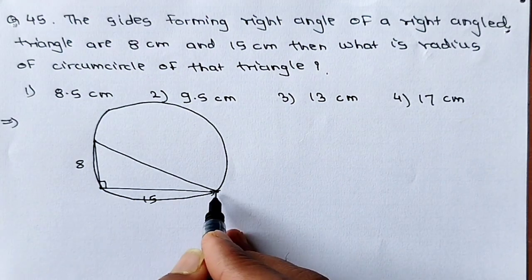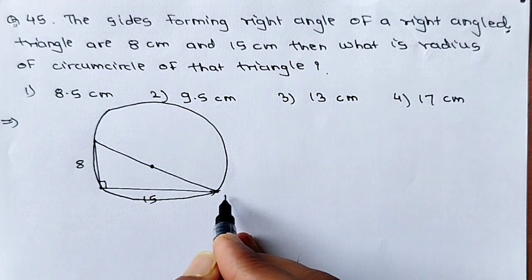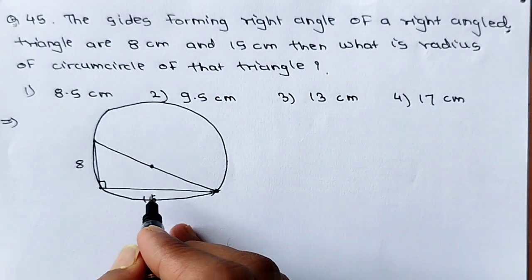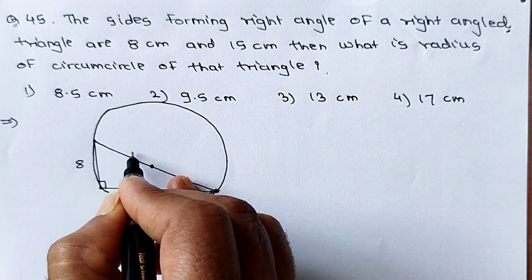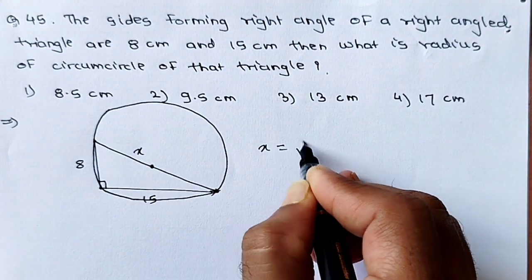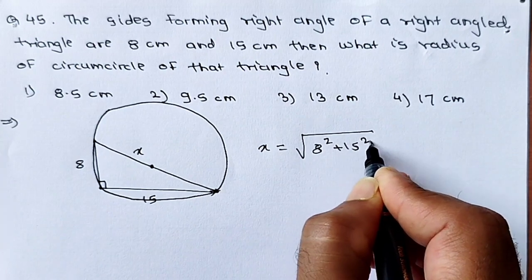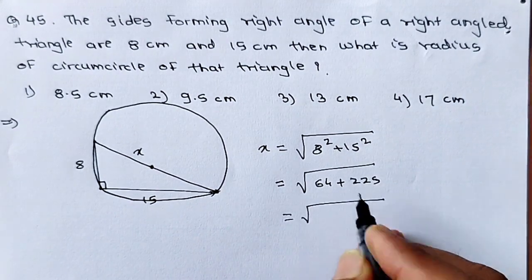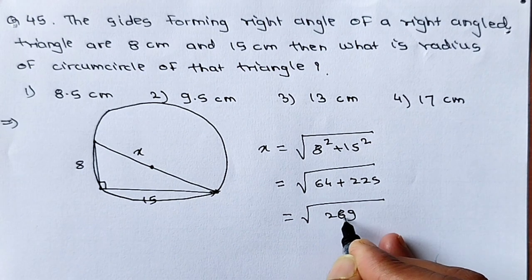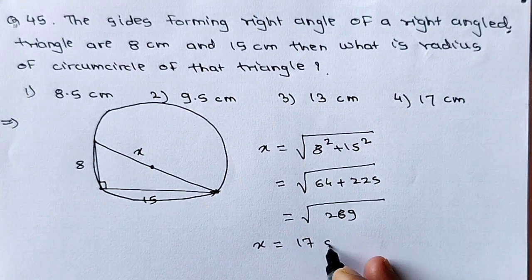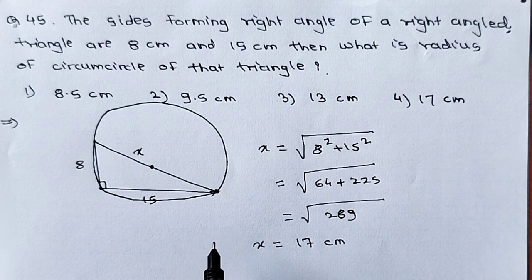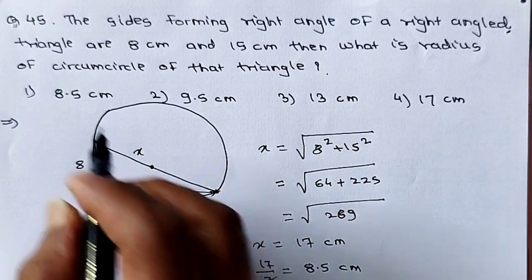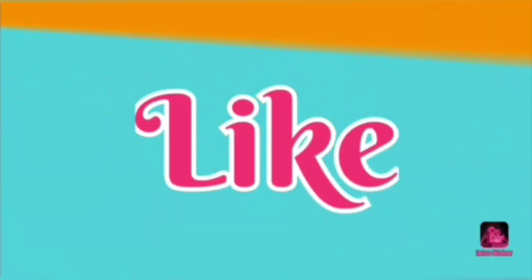For this right angle triangle property, the circumcenter always lies on the hypotenuse. So if we calculate the hypotenuse, we can get the radius. Using Pythagoras theorem, X equals square root of 8 squared plus 15 squared. That is square root of 64 plus 225, which equals square root of 289, giving 17 centimeter. So total diameter is 17 centimeter, and radius will be half of this — radius equals 17 upon 2, that is 8.5 centimeter. So first option is correct. This is all for this video. Thank you.